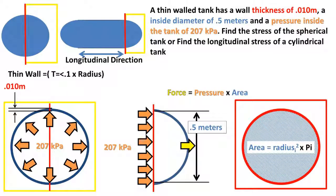We want to find the force that is pushing the tank apart, so we are only interested in the pressure acting 90 degrees perpendicular to the cross-sectional plane. We can take the pressure times the internal cross-sectional area, or internal radius squared times pi, to get the force pushing the tank apart.